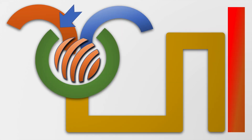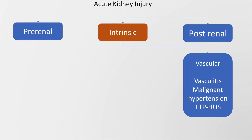Intrinsic acute kidney injury may also be because of anomalies in the vasculature, and may be due to vasculitis, malignant hypertension, and TTP-HUS — thrombotic thrombocytopenic purpura and hemolytic uremic syndrome.